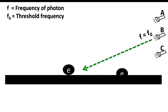As we saw, the photon from source B has a frequency equal to the threshold frequency and is able to eject the electron from the surface of the material without knocking it out. So the energy of this photon must be equal to the work function, which is denoted by phi (φ).